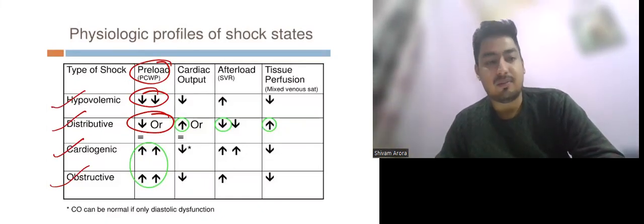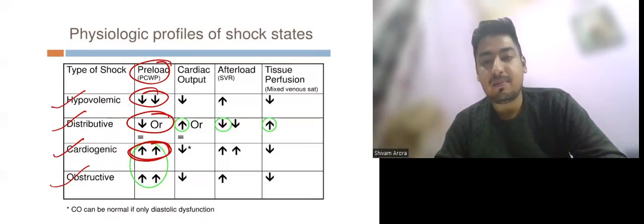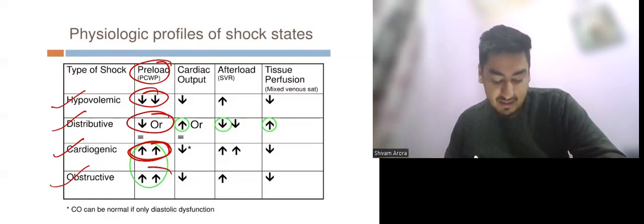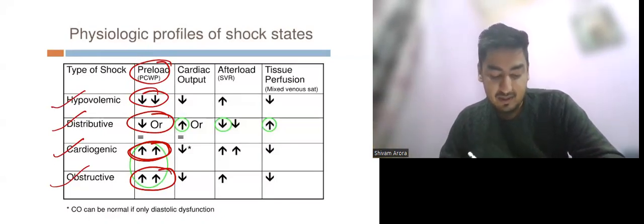In cardiogenic shock, preload increases because the heart is not able to pump blood forward, so preload will increase. In obstructive shock, again the heart is not able to push blood forward, so preload is increased. Now let us discuss cardiac output.